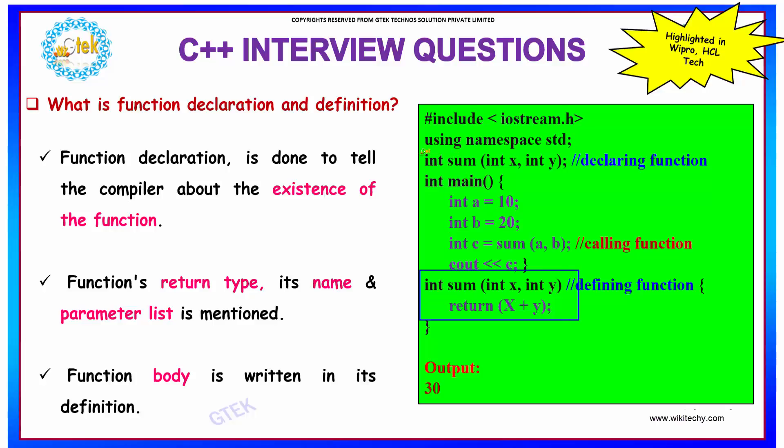So here if you see we are defining the function to the compiler over here that I have a function of sum which can take two variables, and the definition of the function is written over here that you have to add the two variables and return the value. The function is called in your program over here sum of a b by passing two variables.